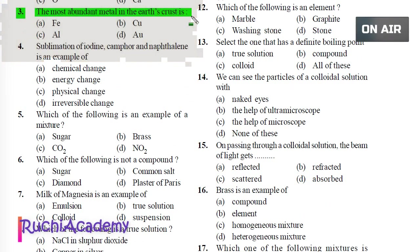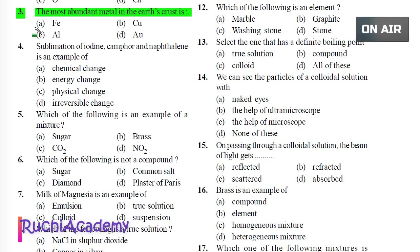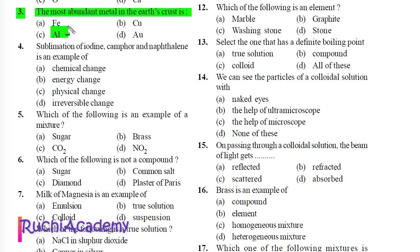Question 3: The most abundant metal in the earth's crust is: A) Iron, B) Copper, C) Aluminium, D) Gold. Correct answer is Aluminium. Aluminium at 8.1% is the most abundant metal in the earth's crust.